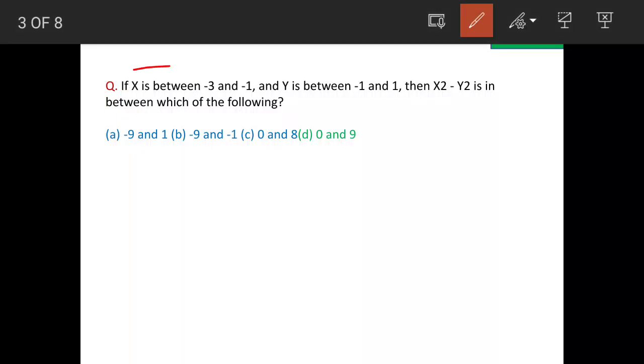If x is between -3 and -1, and y is between -1 and 1, then x² - y² is between which of the following? Option d, 0 and 9, is the correct option.